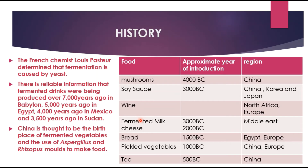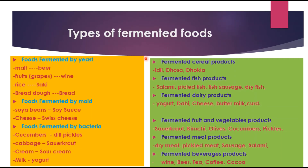The types of fermented foods are classified based on the type of microorganism or the basic raw materials from which they are prepared. Foods fermented by yeast include beer, wine, sake, and bread. Foods fermented by mold, which is a fungi, include soya sauce and Swiss cheese. Foods fermented by bacteria include dill pickles, sour cream, and yogurt.